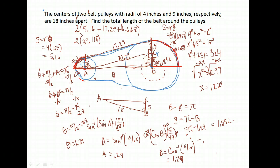We're going to add 5.16, 17.29, and 16.668. That gives me 39.118. That's the top half. Multiply it by 2 to get the full distance around both pulleys, and I get 78.236.